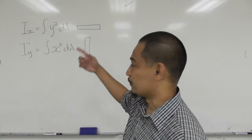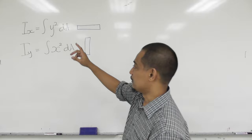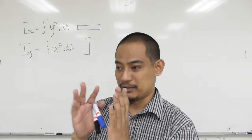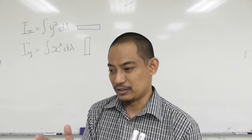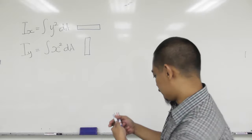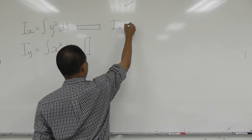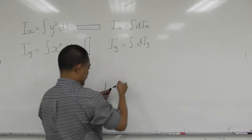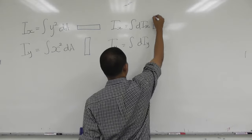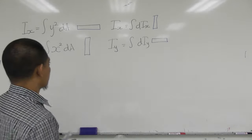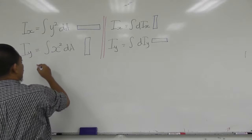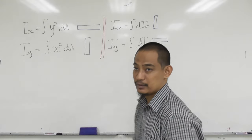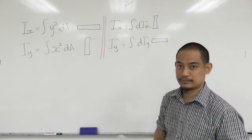If you want to find Ix using a vertical element (because, as in Chapter 9, your option may be limited by the equation of the curve), you use the alternative: Ix = ∫dIx and Iy = ∫dIy. Make sure you know the distinction and do not mix up the elements. Ix = ∫y² dA is for horizontal elements. Ix = ∫dIx is for vertical elements.